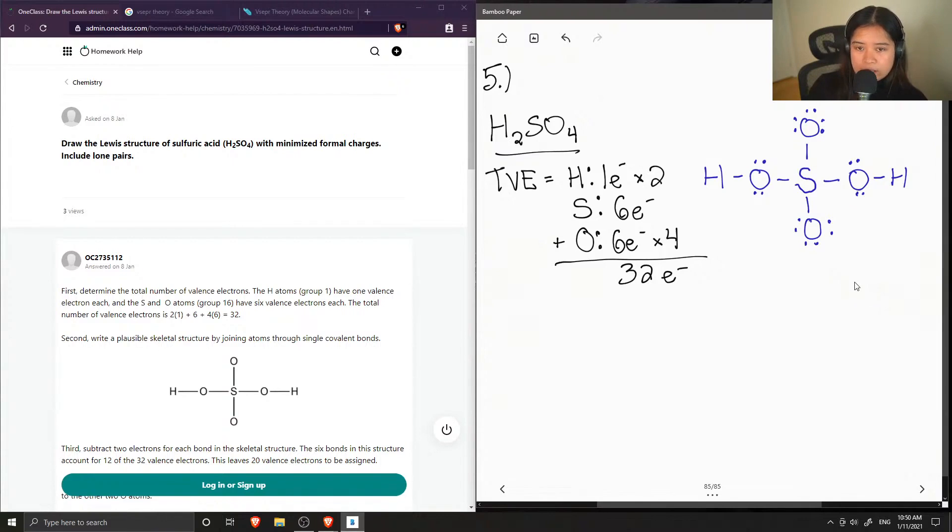So we have 32, but notice that these two oxygen atoms would have a negative charge if this were the correct Lewis structure. But we know that H2SO4 is a neutral molecule. So instead of having a lone pair of electrons for these two, I'm going to make them double bonded instead. So now we have, we still have 32 electrons in total, but everything is now neutral.